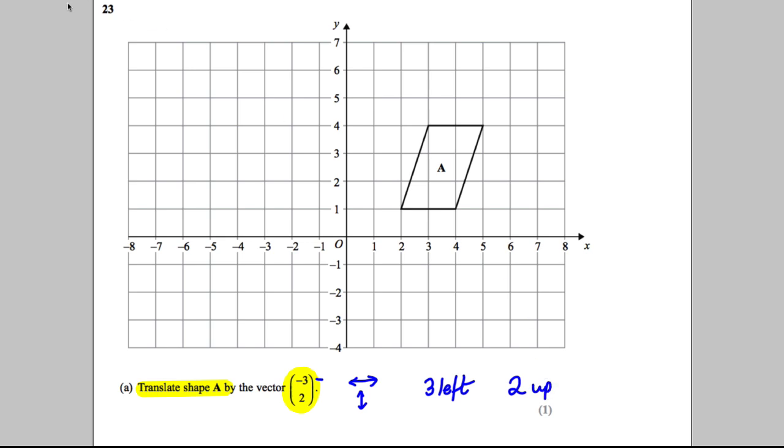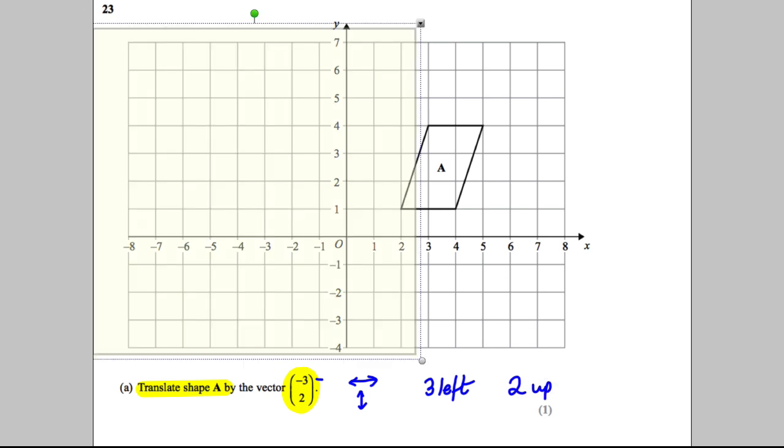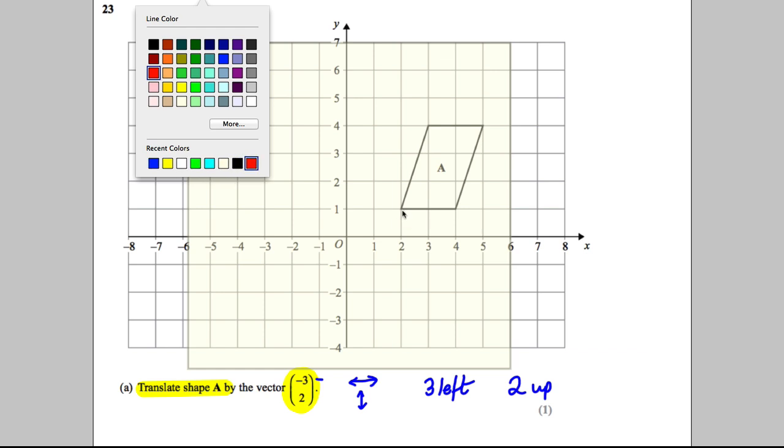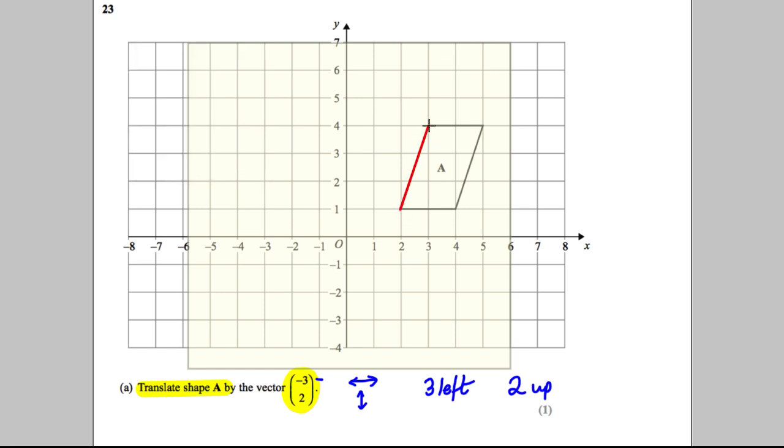There are two ways to do this. The first thing you could do is get your tracing paper out, put it over the shape if you find this way easier, and trace the shape out.